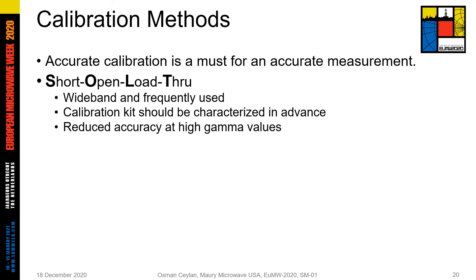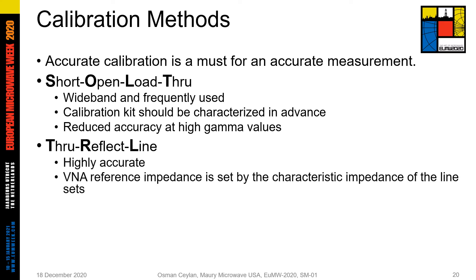TRL calibration uses two lines and a reflect standard. The reflect standard can be either a short or an open. The lengths of the lines should be different from each other. It's an accurate calibration method. In TRL calibration, the reference impedance of the measurement setup is set by the characteristic impedance of the lines. Therefore, fabrication tolerances are dominant on the accuracy of the calibration. It's mostly used for on-wafer measurements for high-frequency applications.